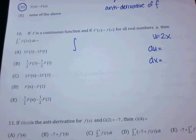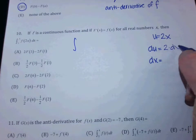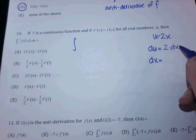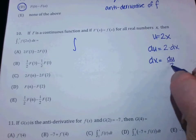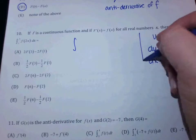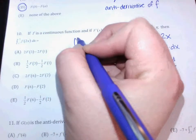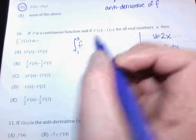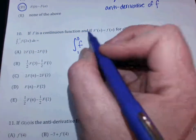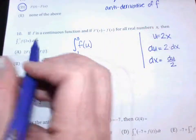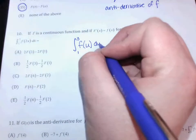So if U is 2X, what's the derivative? 2DX, which means that DX is DU over 2. Now we're going to our rewrite step. I have the integral from 1 to 3. F of — it used to be a 2X. What is it now? A U. And then instead of a DX, now it's a DU over 2.